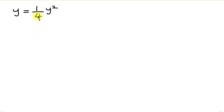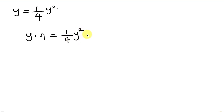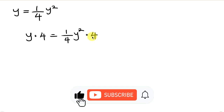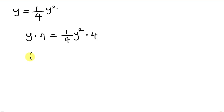To clear the fraction, we multiply both sides by 4. So y times 4 gives 4y on the left, and on the right the 4 cancels with the denominator 4, leaving y squared.